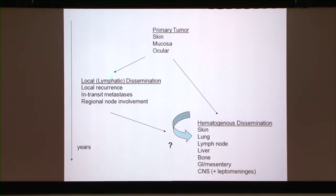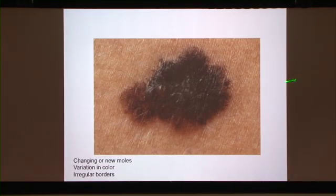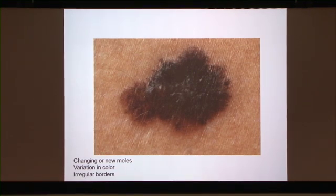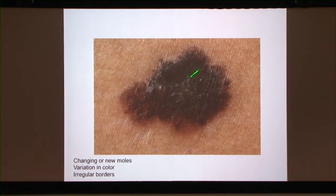From the time of local spread or primary tumor to the time of metastatic disease can be a few weeks to many, many years — up to 25 years. In my clinic, I don't think I've ever seen a primary lesion. By the time people reach me, their disease has been treated by the dermatologist or by the plastic surgeon, and it's very unusual for me to ever see a primary lesion in the clinic.